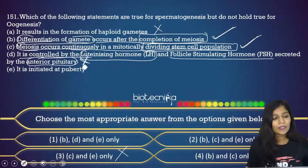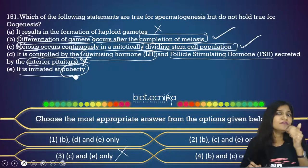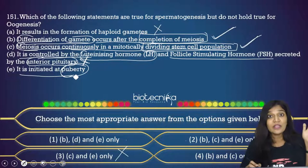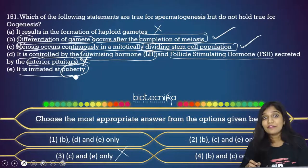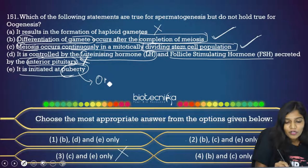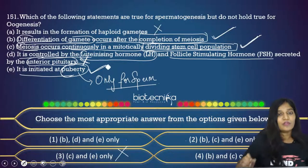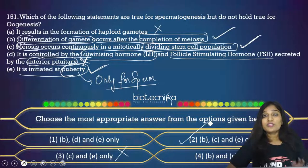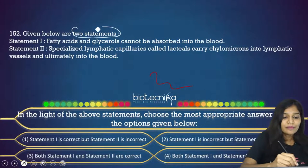Option E: 'It is initiated at puberty.' Sperm production begins after puberty (around 14–16 years). However, in females, primary oocytes are produced even during embryonal development; the oogenesis process begins much earlier. So this statement is only true for spermatogenesis, not oogenesis. Combining the correct options, the answer for Q151 is option 2.